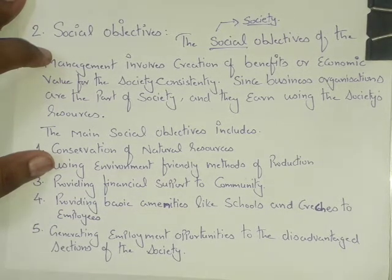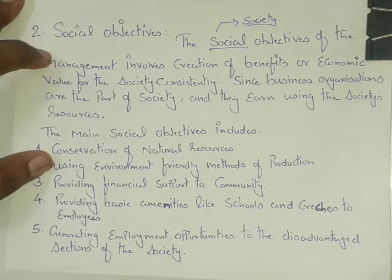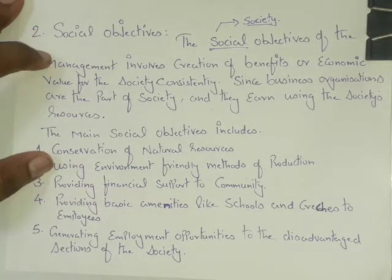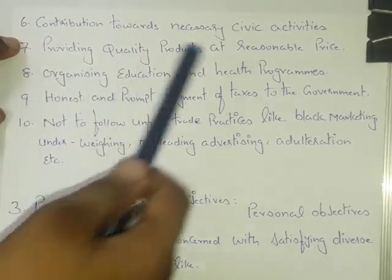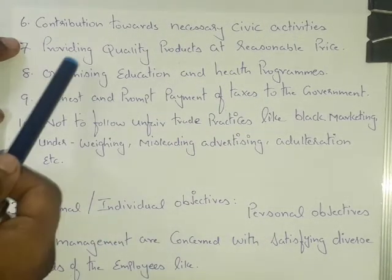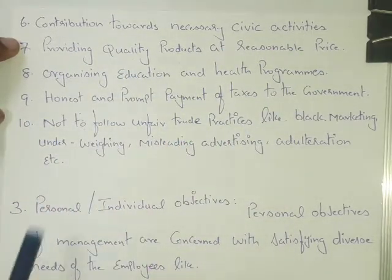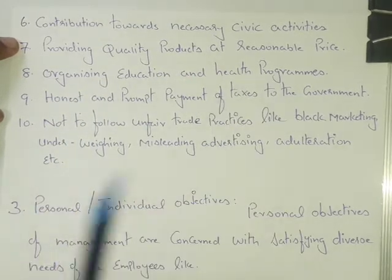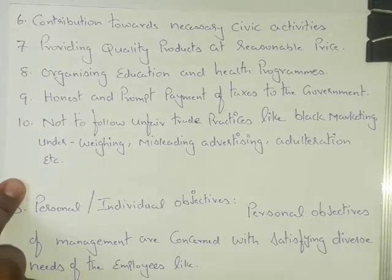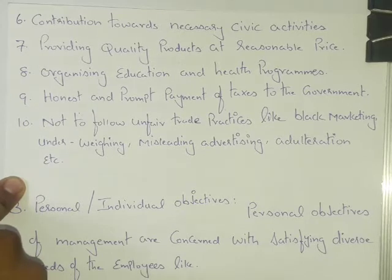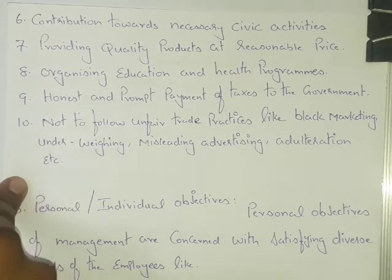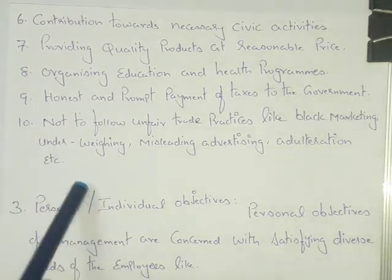Next is generating employment opportunities for the disadvantaged sections of society — considering backward community people and providing reservation or employment opportunities to those sections. Contribution towards necessary civic activities and providing quality products at a reasonable price are also included. Organizing education and health programs forms part of social responsibility. Prompt payment of taxes to the government honestly, and being honest — not following unfair trade practices.